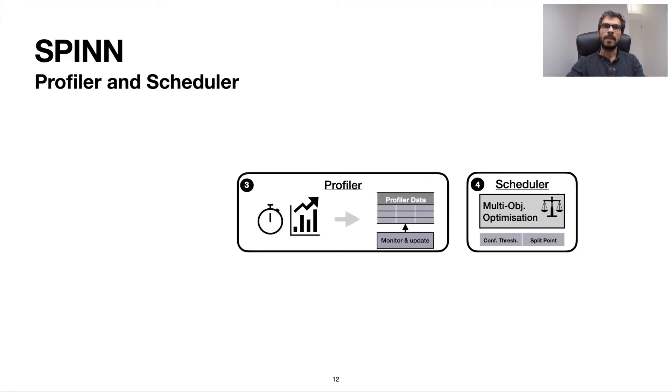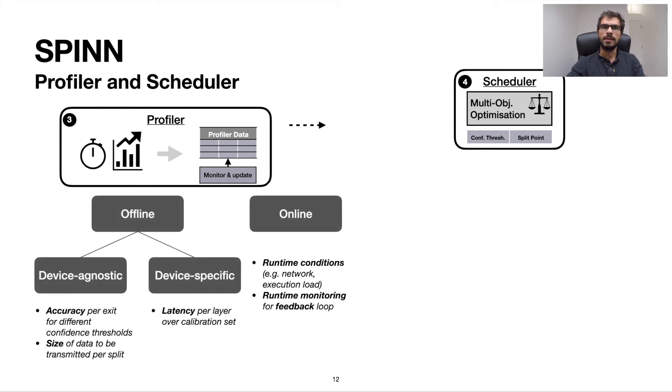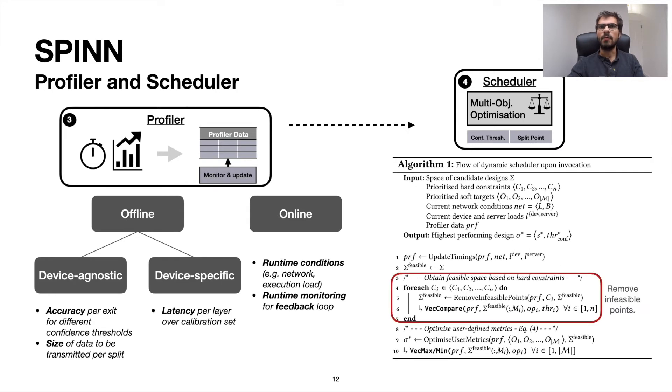Subsequently, the profiler of Spin is responsible for aggregating the data according to which the scheduler makes its decisions. Spin's profiler has an offline and online component. The former takes both device-independent metrics, such as accuracy per confidence threshold or the size of the data to be transmitted for different split points, as well as device-dependent information, such as the on-device latency per layer measured over a calibration set. This information serves as initial estimates later to be defined at runtime by monitoring the execution context. Spin's scheduler subsequently takes this information and first removes the infeasible points according to the user-defined SLAs, which are the hard constraints of the scheduler, and second, it ranks the solutions based on the user-defined ordering, these are the soft targets of the scheduler, and selects the best performing design in a multi-objective manner.